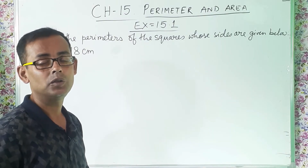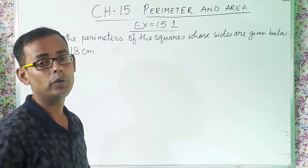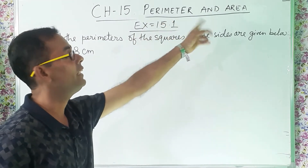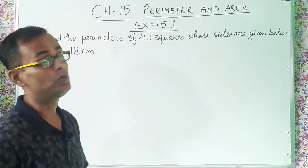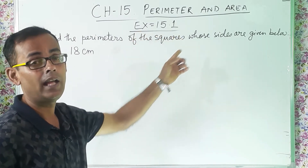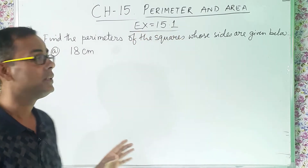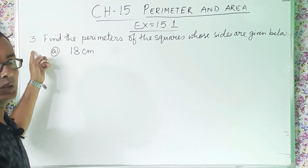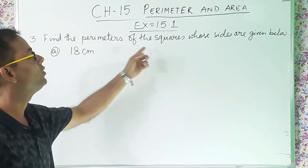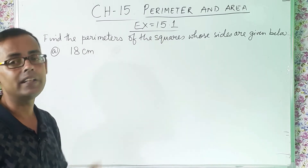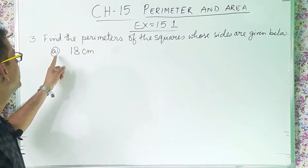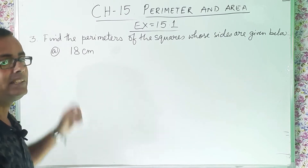So students, we are going with chapter 15, Perimeter and Area, and we are solving exercise 15.1. Today we are going to solve question number 3. Find the perimeters of the squares whose sides are given below. Question number 3A is telling 18 cm.